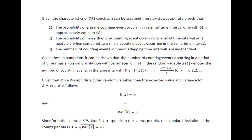The uncertainty, calculated as the standard deviation, is the square root of the variance. Therefore the uncertainty in lambda — which are the counts — is the square root of lambda. We know how to calculate the uncertainty in our data because XPS satisfies the conditions necessary for Poisson statistics.